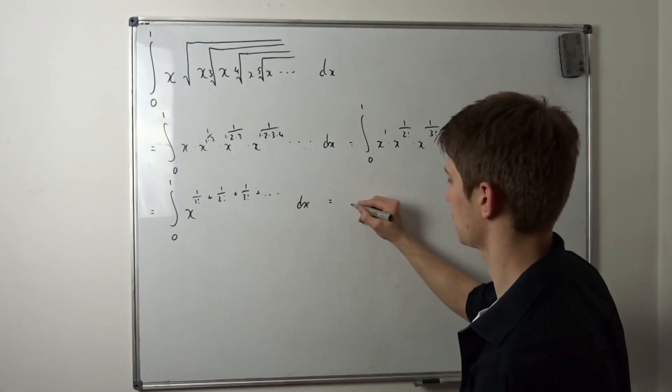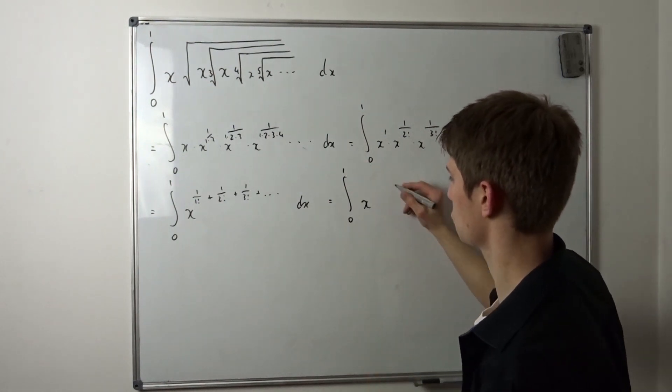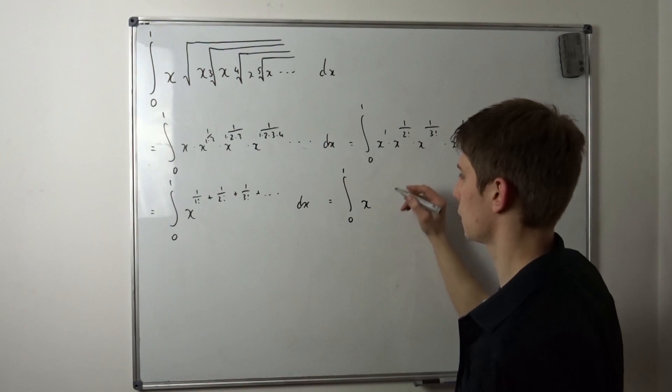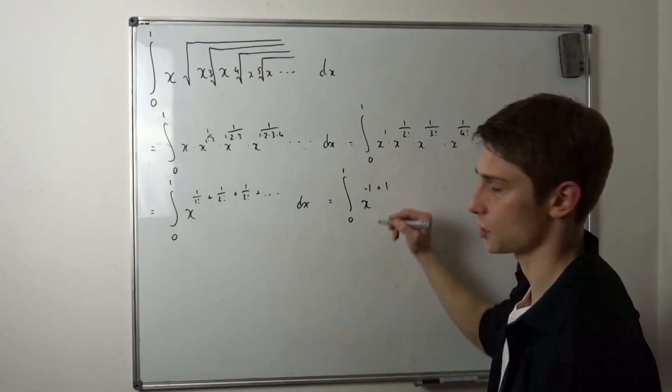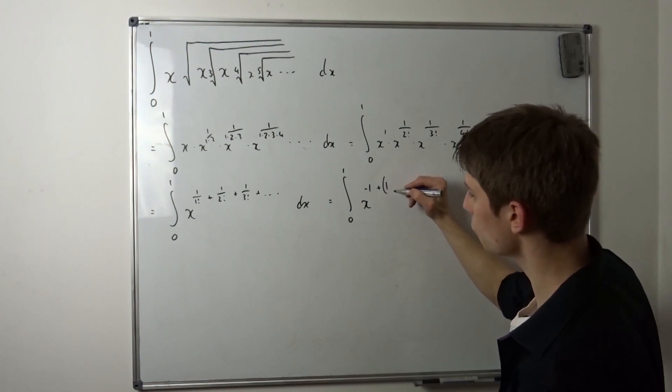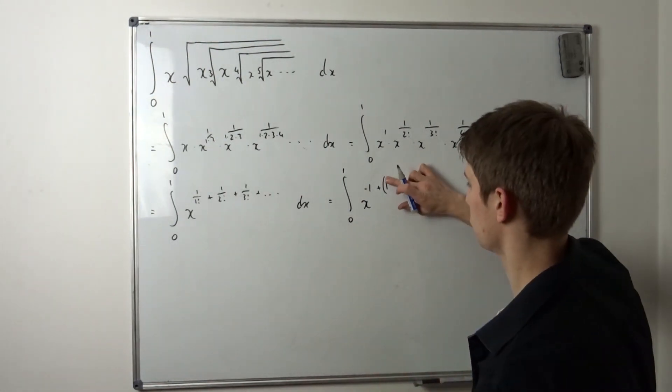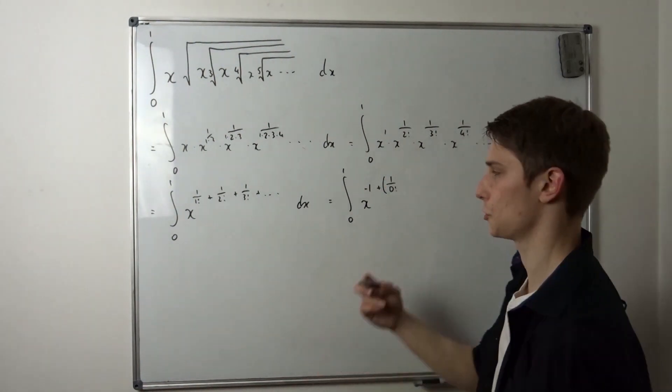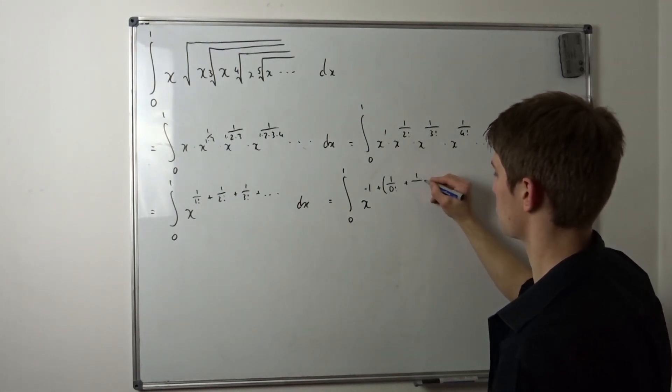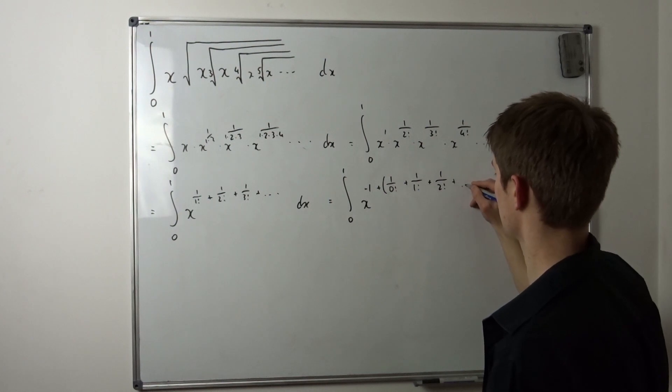So let's rewrite this a little bit. This is the integral from zero to one of x to the... So that's minus one and then plus one. But I'm going to place parentheses here. And like I said before, we want to write this one as one over zero factorial. So it becomes clear to you guys, and then plus one over one factorial plus one over two factorial plus dot dot dot